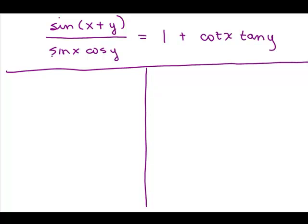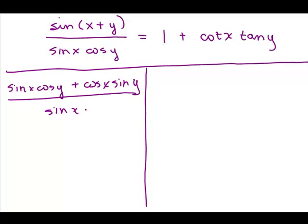So the sine of X plus Y over the sine of X cosine of Y. Let's start with that. Usually you start with the harder side. In this case, because it has the sine of X plus Y, I'm going to use the identity for the sine of the sum. So that becomes sine X cosine Y plus cosine X sine of Y, and that's all over sine X cosine Y.